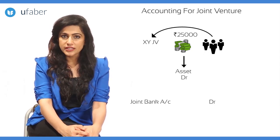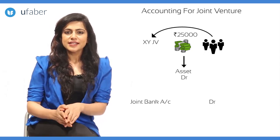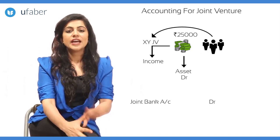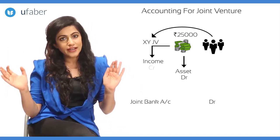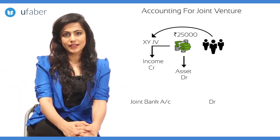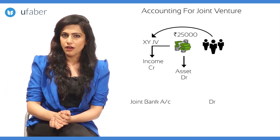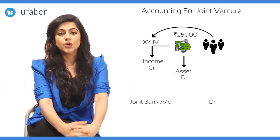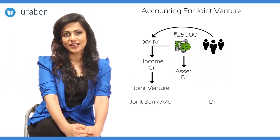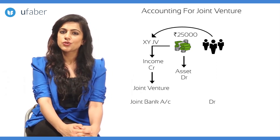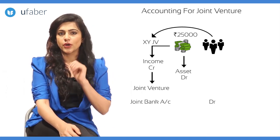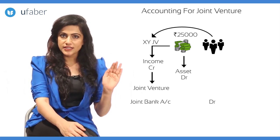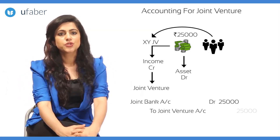The amount brought in is on account of sales. Sales is an income for the venture — hence it is a nominal account. Since we have an open sales account in the joint venture, the sales account is generally transferred to the profit and loss account. In case of joint venture, the joint venture account acts as the profit and loss account. Hence we credit the amount to joint venture account. The journal entry is: joint bank account debit rupees 25,000, to joint venture account 25,000.